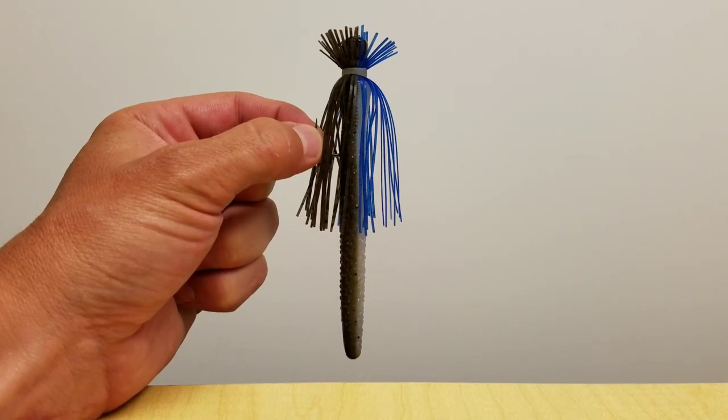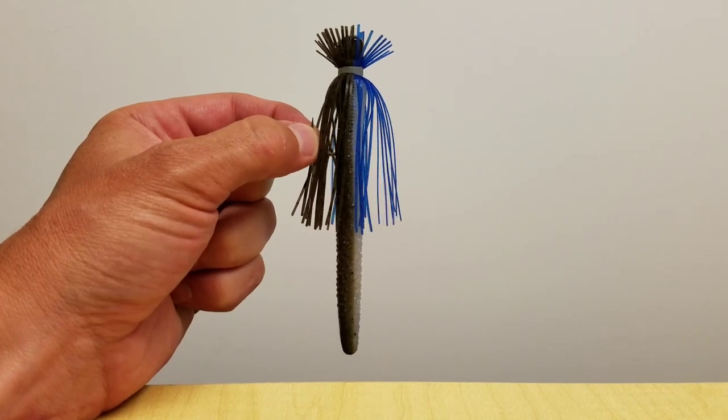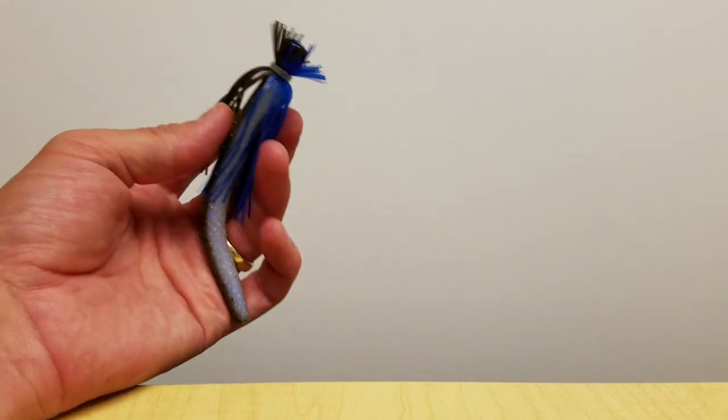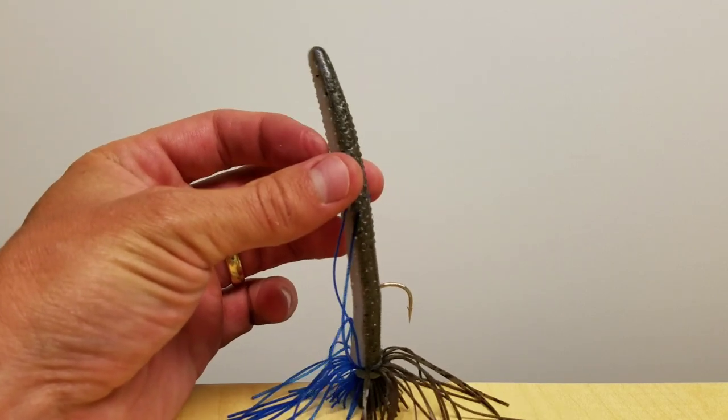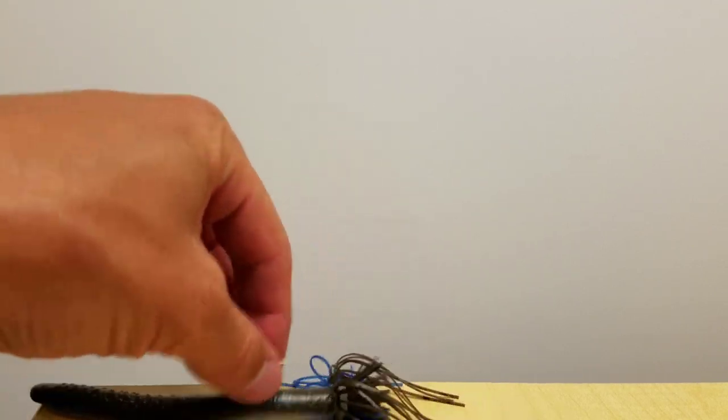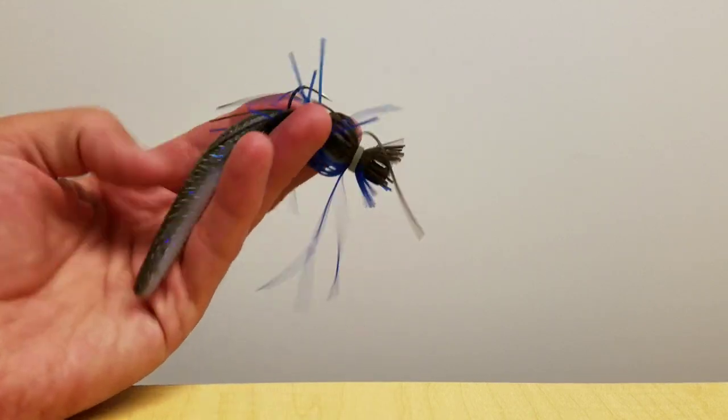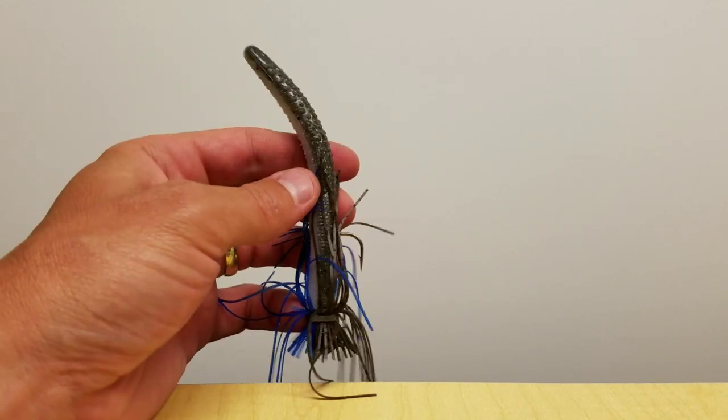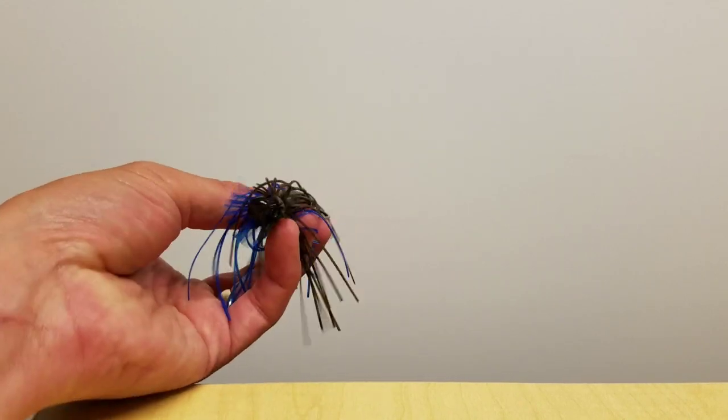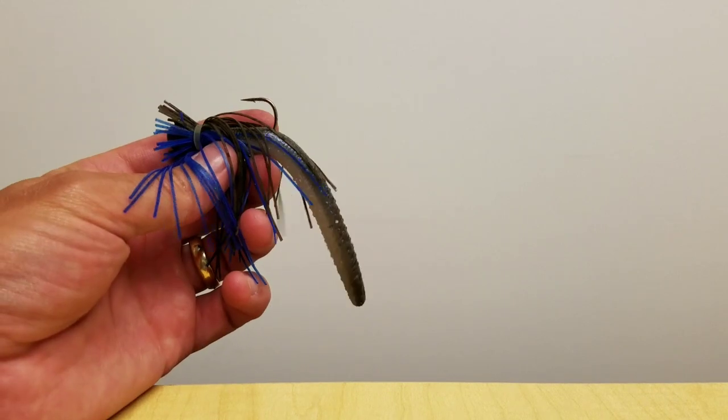And so this bait right here weighs over a quarter ounce, can be thrown on a bait caster or on a spinning setup. It is a Ned Rig type of bait, but the cool thing is it's going to stand up straight. That skirt is going to give you some good secondary action. And this heavy one-fifth ounce weight is going to get you down to the bottom and allow you to stay there unless you want to start working it faster and swim it, which you can.